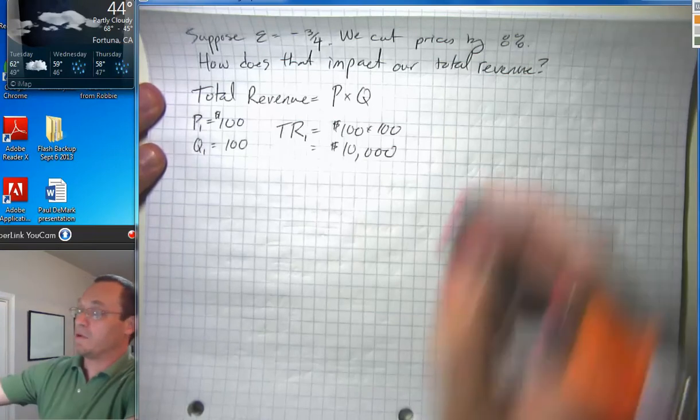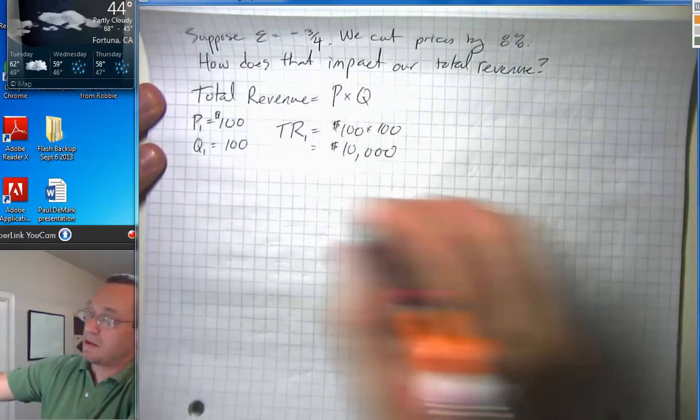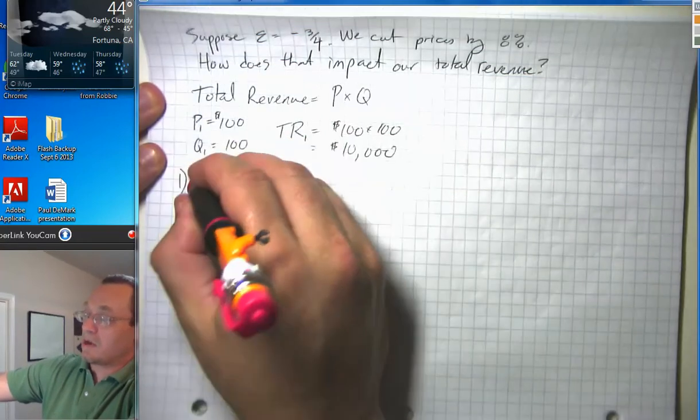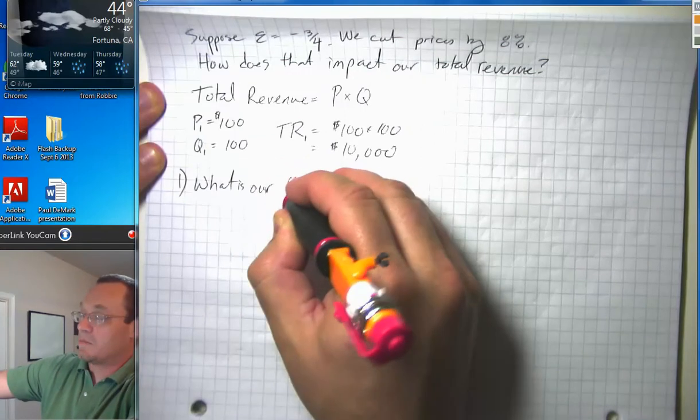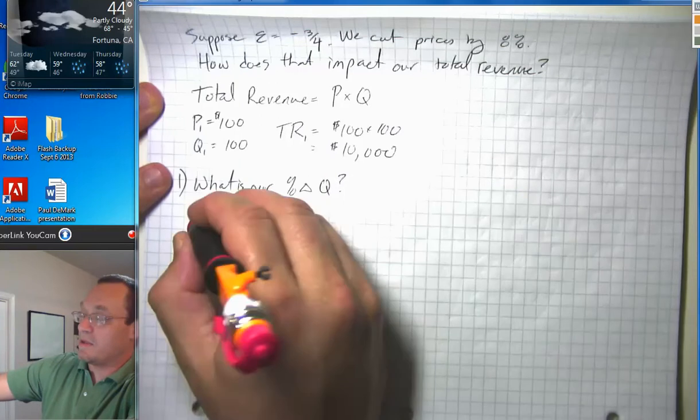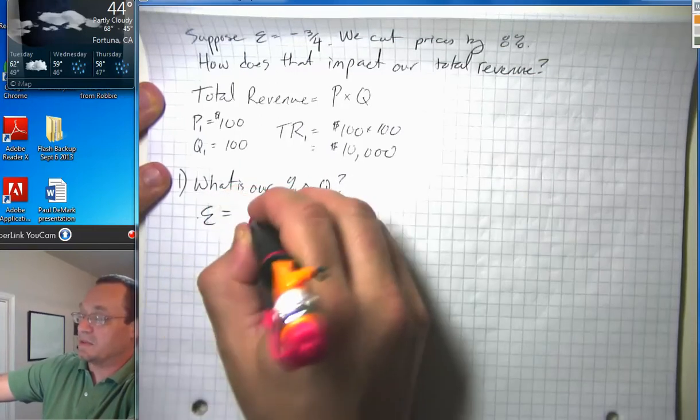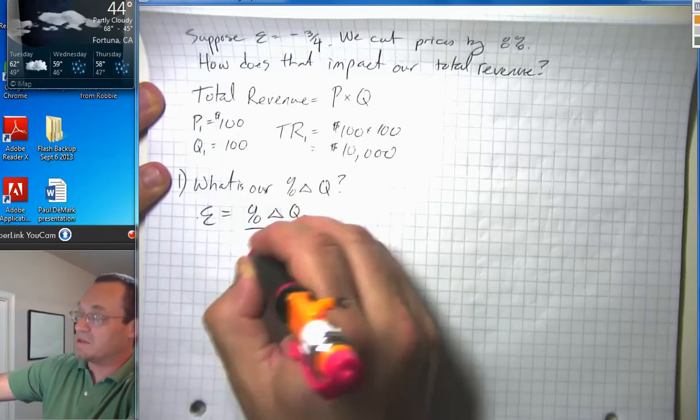So, first thing we're going to do is ask ourselves, what is our percent change in quantity? Well, we know that elasticity equals percent change in quantity demanded over percent change in price.